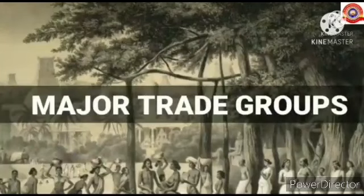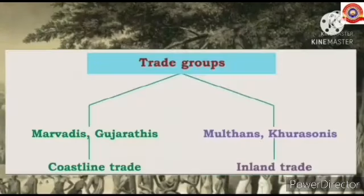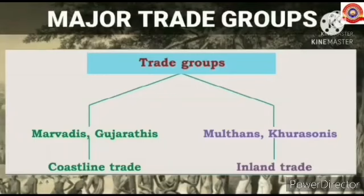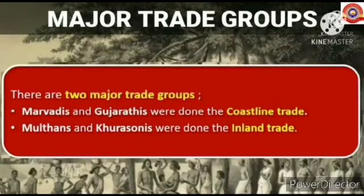First, major trade groups. The trade groups of the medieval period are of two types. The first one is Marwadis and Gujaratis, and the second one is Multans and Khorasanis. Marwadis and Gujaratis were involved in the coastline trade, while Multans and Khorasanis were involved in the inland trade.